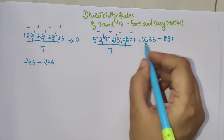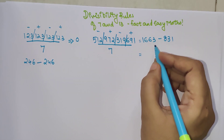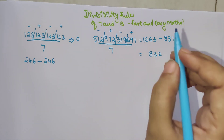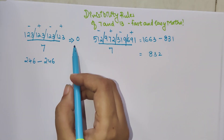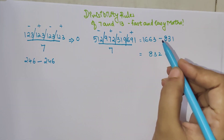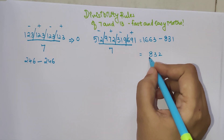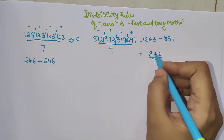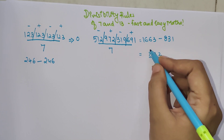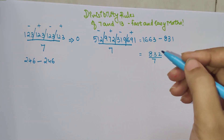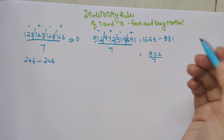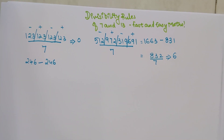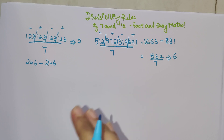After the subtraction, the final result comes out to be 832. Since we didn't get zero, we divide 832 by 7: 7 goes into 83 at most 11 times (77), giving 6 remaining, then bringing down 2 gives 62, and 56 fits, leaving remainder 6. So the final remainder is 6.